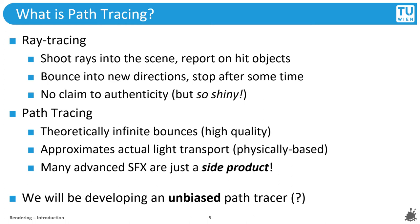But ray tracing on its own usually has no claim to authenticity because it is often not physically correct. For that, we need path tracing, ray tracing's big brother. Path tracing actually includes considerations of physical behavior of light, and there is a substantial amount of math involved. But once you do, complex physically based effects like caustics or soft shadows just fall out of it as a side product. In this lecture, we will give you the background and tools for developing an unbiased path tracer.